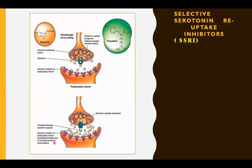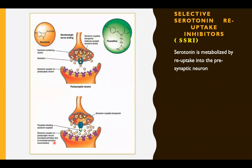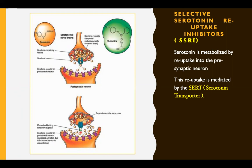The selective serotonin reuptake inhibitors act on the metabolism of serotonin. Serotonin is metabolized by reuptake into the pre-synaptic neuron after exerting its post-synaptic effects, mediated by the serotonin transporter called SERT (S-E-R-T). When SERT is functioning normally, the amount of serotonin remaining in the synapse is very low. When SERT is blocked by fluoxetine or Prozac, serotonin levels are much higher, its effects are enhanced, mood is elevated, and it is used in the treatment of depression.